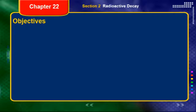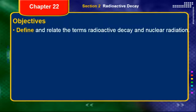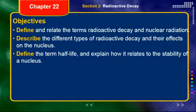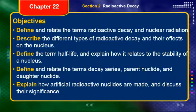In part one of this video lecture, we want to define and relate the terms radioactive decay and nuclear radiation, describe the different types of radioactive decay and their effects on the nucleus, define the term half-life and explain how it relates to the stability of a nucleus. The last two objectives for this section will be covered next lecture.